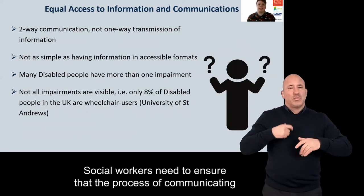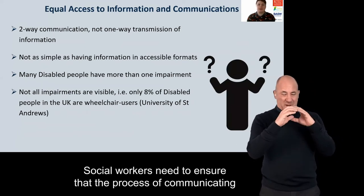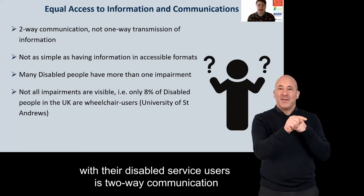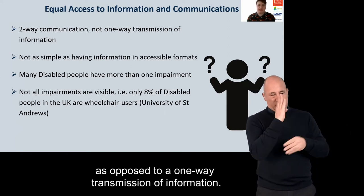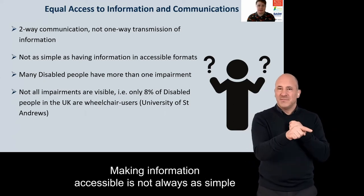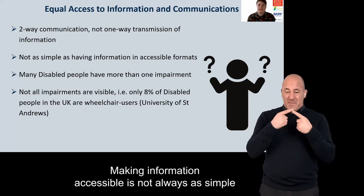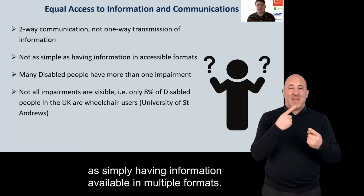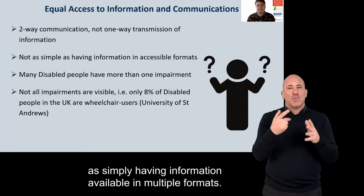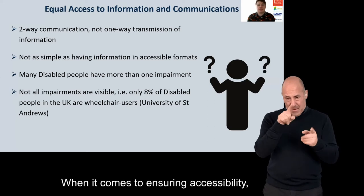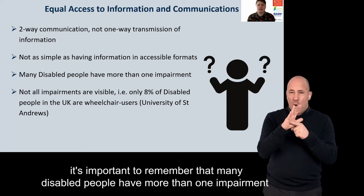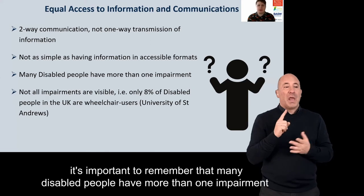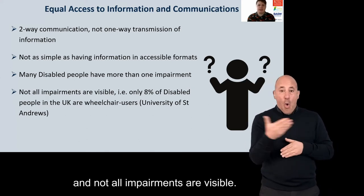Social workers need to ensure that the process of communicating with their disabled service users is one of two-way communication, as opposed to a one-way transmission of information. Making information accessible is not always as simple as having information available in multiple formats. When it comes to ensuring accessibility, it's important to remember that many disabled people have more than one impairment, and not all impairments are visible.